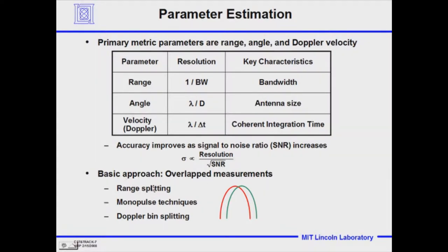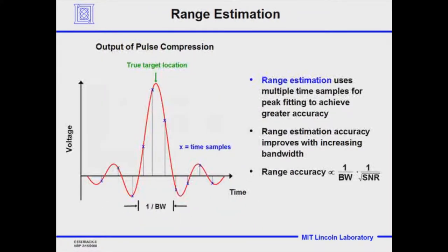The basic overall approach we use is to look at overlapped measurements — range splitting, monopulse techniques, and Doppler filter or bin splitting. We look at the target with the range cell set in one location and slightly overlapping in another. By looking at the differences in the measurements, we can see where within the range, angle, or Doppler cell the target really is, and that's how we hone in on measurement accuracy.